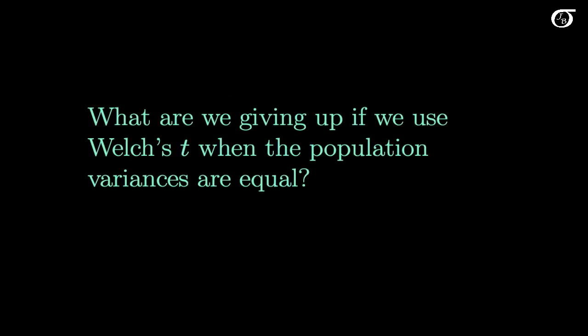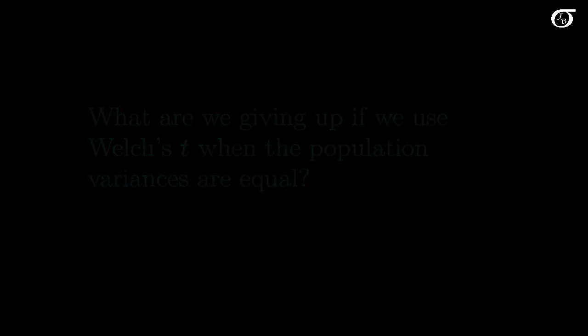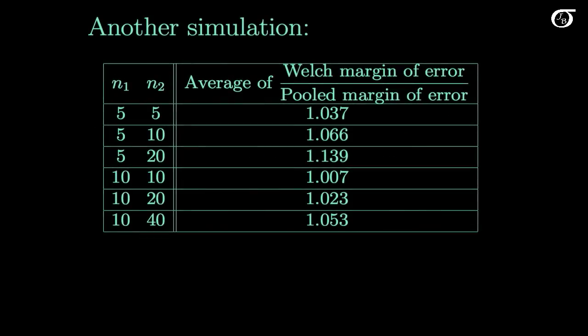The next natural question is: if the Welch procedure works better than the pooled t in many situations, how much are we giving up if we actually use the Welch t when population variances are equal? I looked at that in another simulation — here's a simulation of the ratio of the margins of error. I take the margin of error for the Welch procedure and the margin of error for the pooled variance procedure and compare them.